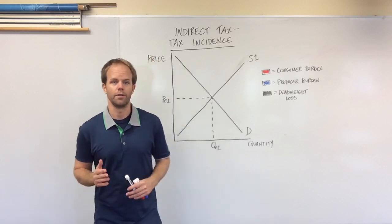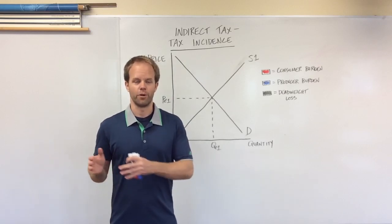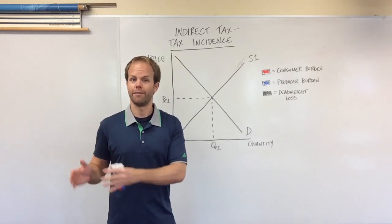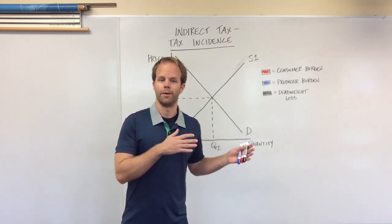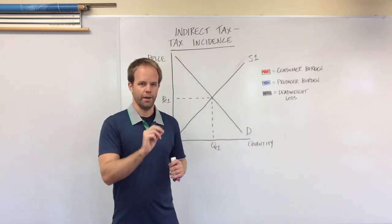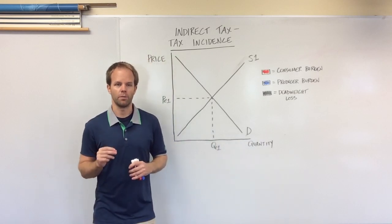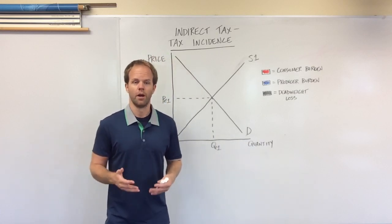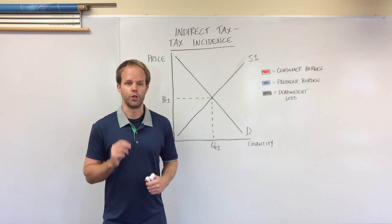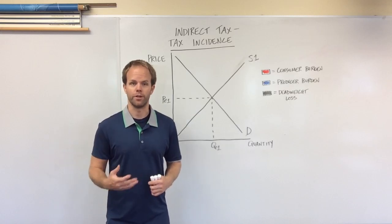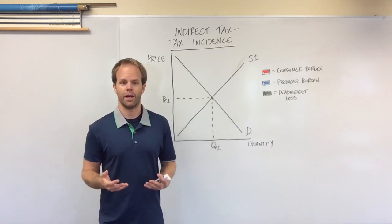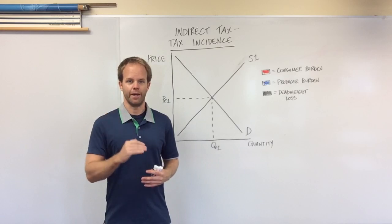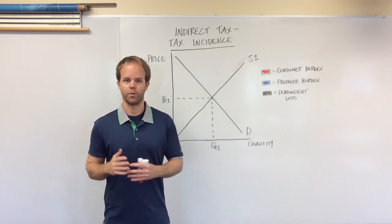An indirect tax is when the taxpayer pays their money eventually to the government, but it doesn't go straight to them. In this case, indirect taxes are almost always going to be a sales tax. If you've heard the expression 'sales tax' or seen the abbreviation GST — that stands for goods and services tax — all those are taxes on consumption. What is being taxed is the actual buying of the product.